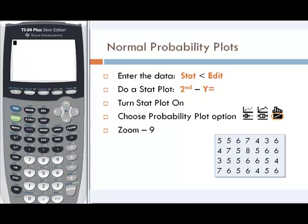I'm going to talk about normal probability plots. Normal probability plots will tell us whether our data is normal or not. We're going to take our data and plot it on a normal probability plot. If our plot is roughly linear or approximately linear, then we can say our data is approximately normal.